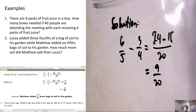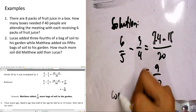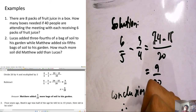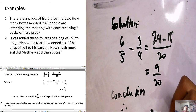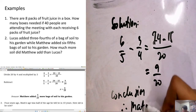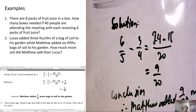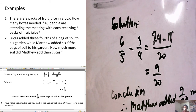So our conclusion: therefore, Matthew added 9/20 more bags of soil than Lucas in his garden. That is how to answer this one. Thank you for watching Lesson Number 2 of Module Number 10. Thank you.